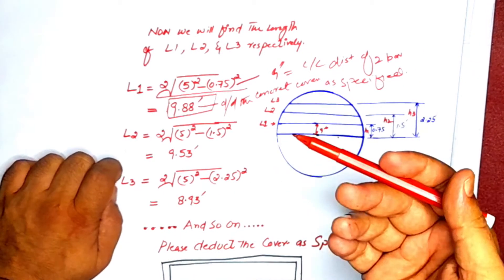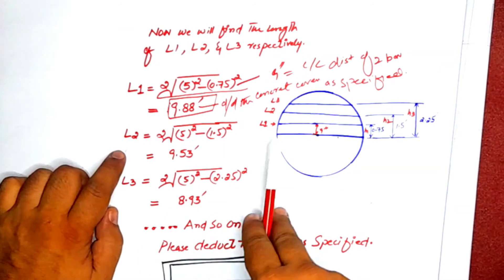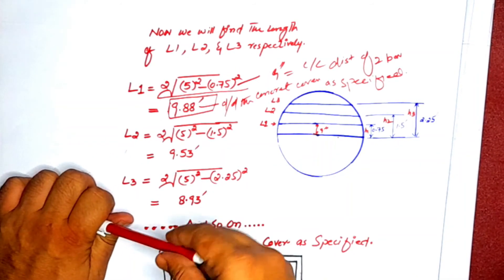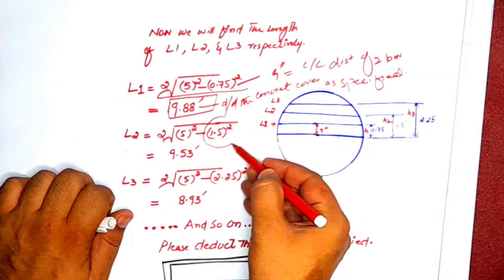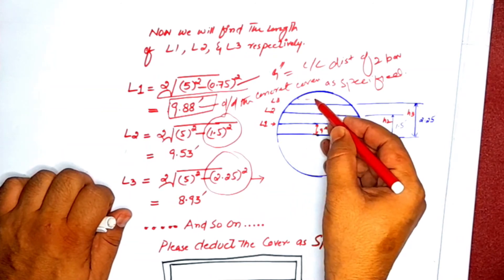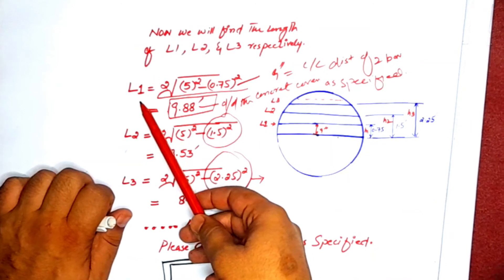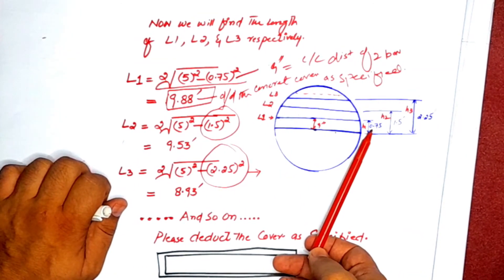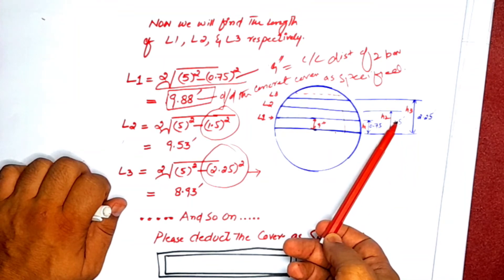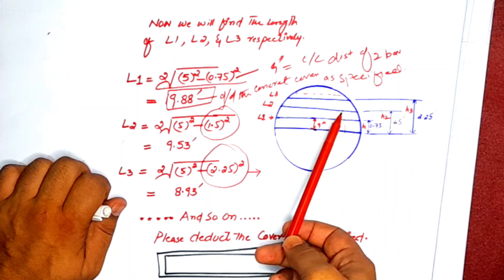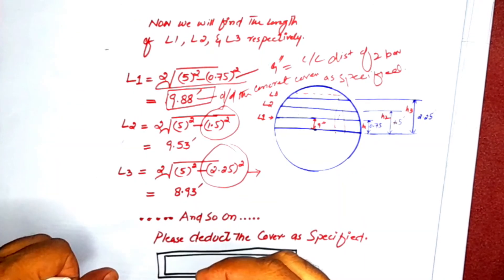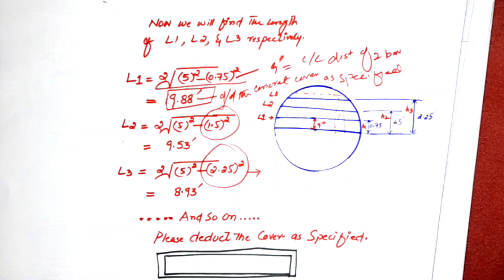By the same formula we can find L2, L3, L4, and so on. One important thing to remember: the value of h increases as the bar number increases. For L1 it is only 9 inches (0.75 ft); for L2 it becomes 9 + 9 = 18 inches, divided by 12 equals 1.5 feet; and for L3 it becomes 9 + 9 + 9 = 27 inches, which is 2.25 feet.